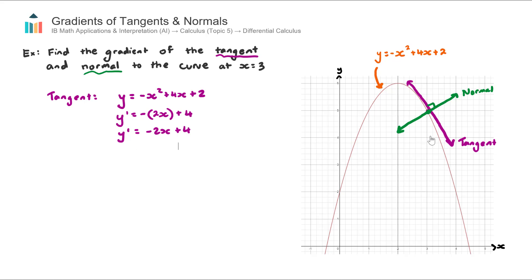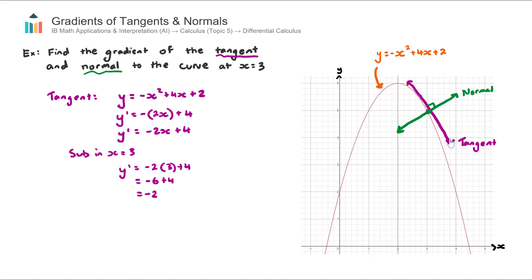To find the gradient of the tangent — the purple line — at x equals 3, we substitute x equals 3 into our derivative. So y dash equals negative 2 multiplied by 3 plus 4, which is negative 6 plus 4, which equals negative 2. So the gradient of the tangent, which is the same as the slope of the curve at x equals 3, is mt equals negative 2.